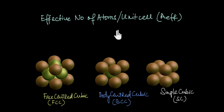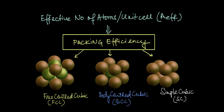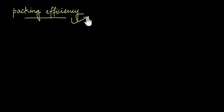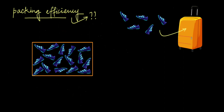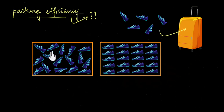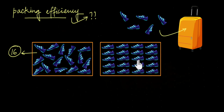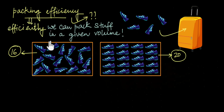In this video we are going to see how we can use the effective number of atoms, A_effective, to calculate the packing efficiency of different unit cells. To understand what packing efficiency means, imagine packing shoes into a bag. If you randomly throw shoes in, you pack fewer — say 16 — compared to arranging them neatly, where you fit 20. Packing efficiency is how efficiently we can pack items into a given volume.